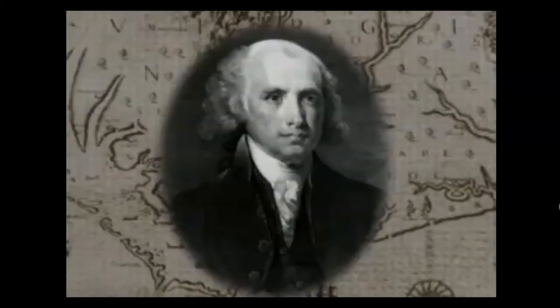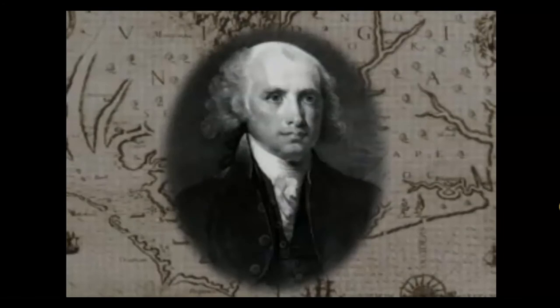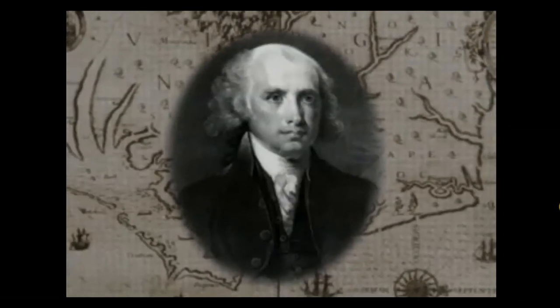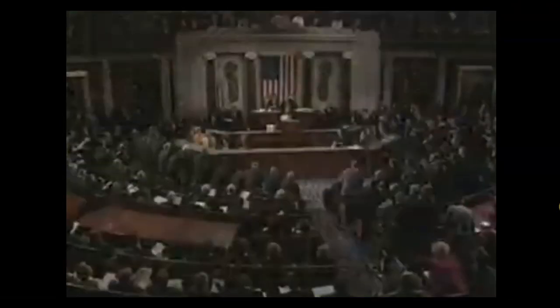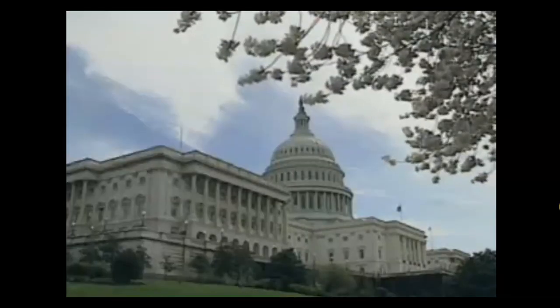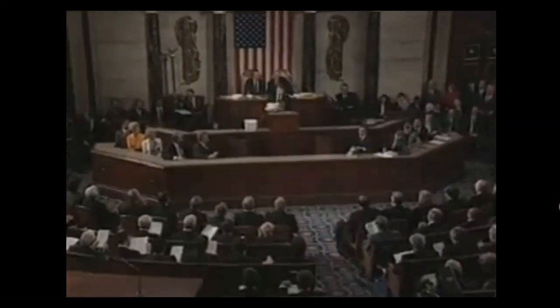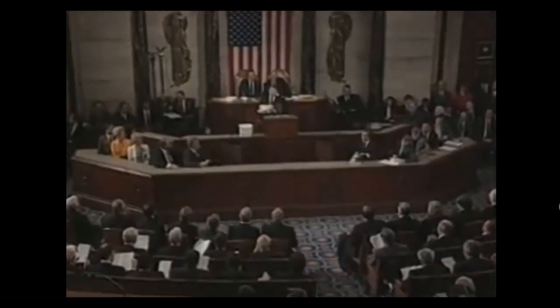As for how our government is structured, James Madison hit the nail on the head with the Virginia Plan. Governmental powers are separated into three branches: the legislative, executive, and judicial branches. Though they are separate, the three branches also share power through a system of checks and balances. For example, Congress can pass a law, but if the president doesn't think it's good for the country, he or she can veto it — that's a check by the executive branch on the legislative branch.